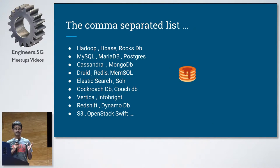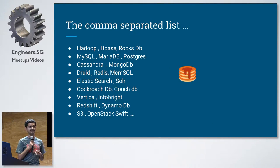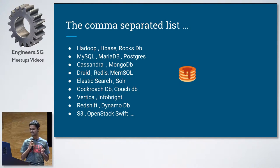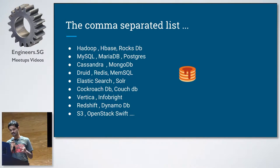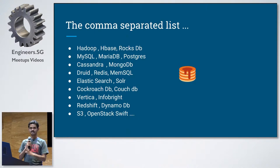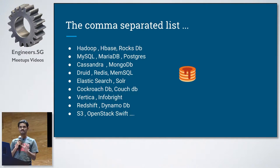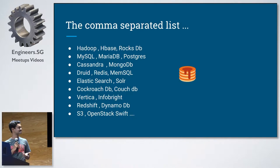This is a comma-separated list of possibly all the well-known databases out there: Hadoop, HBase, Druid, Elasticsearch, CockroachDB, CouchDB, Vertica, InfoBright, Redshift, etc. It's a huge list. You probably might be using some of them, all of them, or one of them at least.